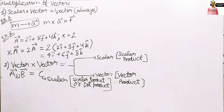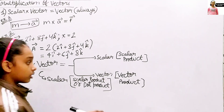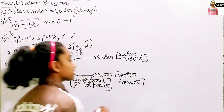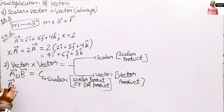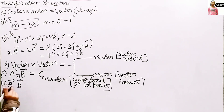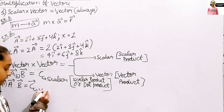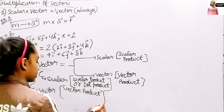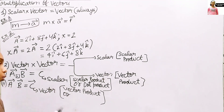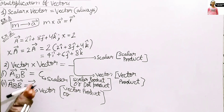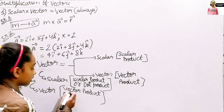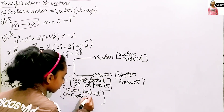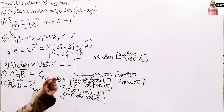Now let's look at vector product. When we multiply vector A by vector B and we get vector C — a vector quantity — it is called vector product. Vector product also has another name: cross product. We write it as vector A cross vector B equals vector C, using the cross symbol. So: scalar product or dot product gives a scalar, and vector product or cross product gives a vector.